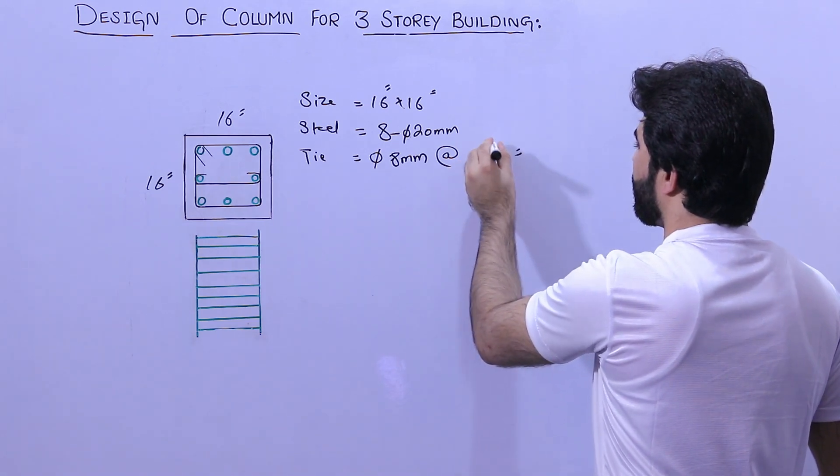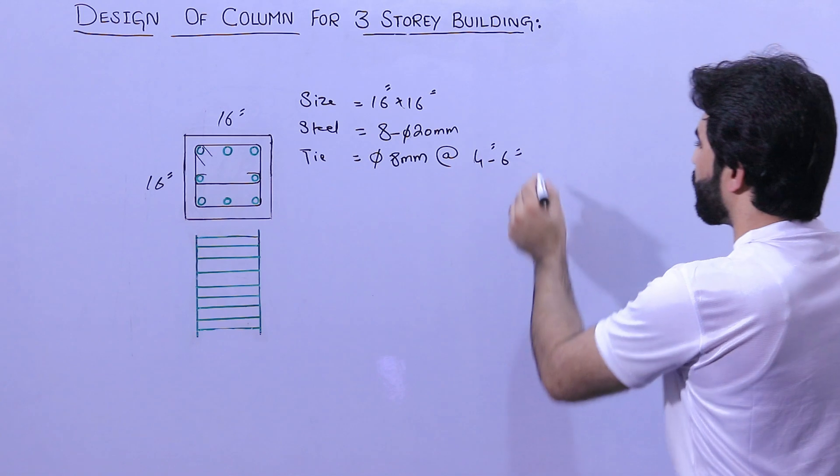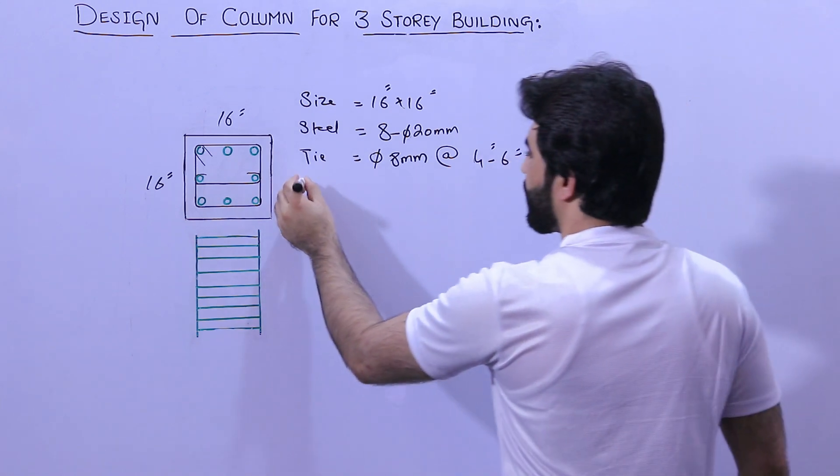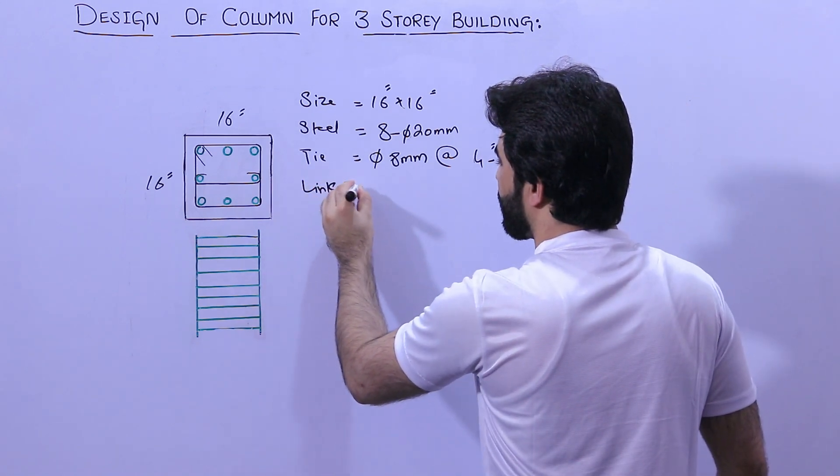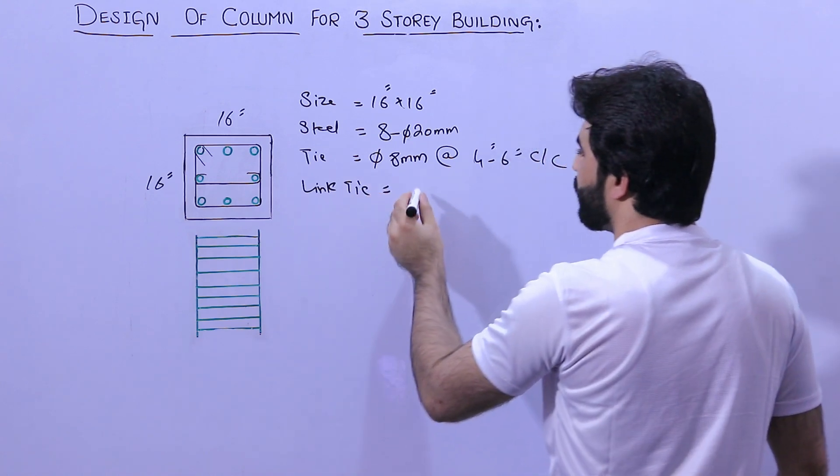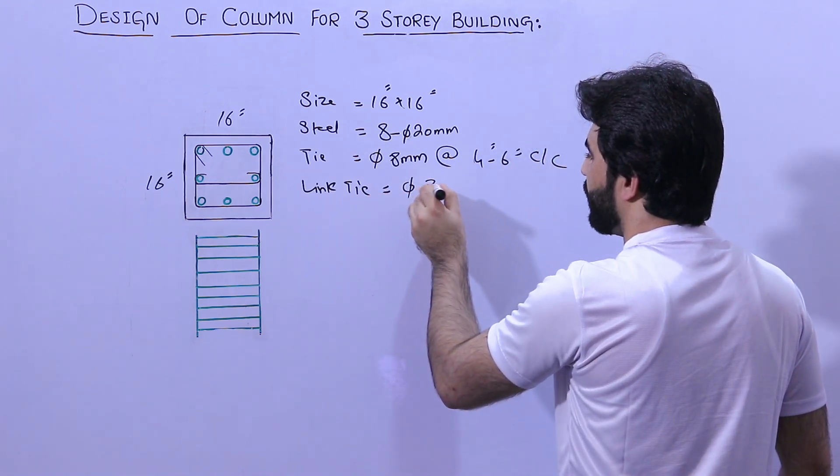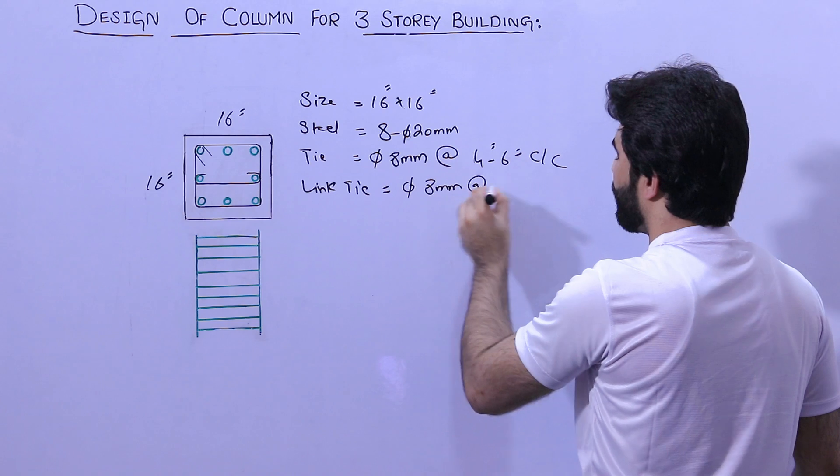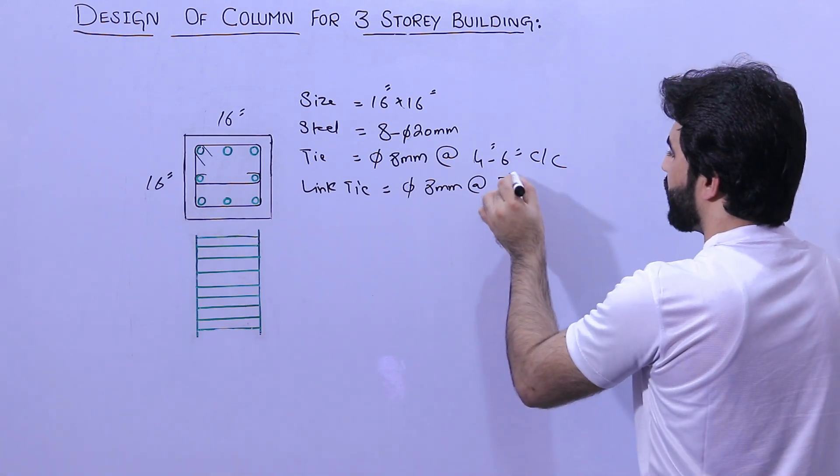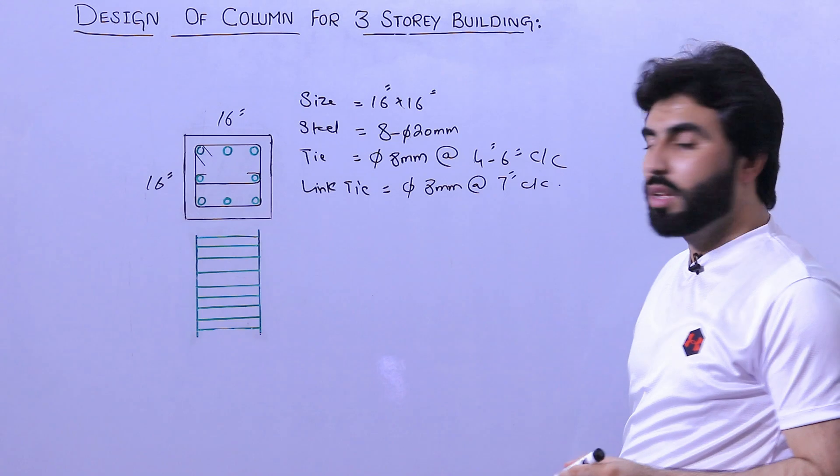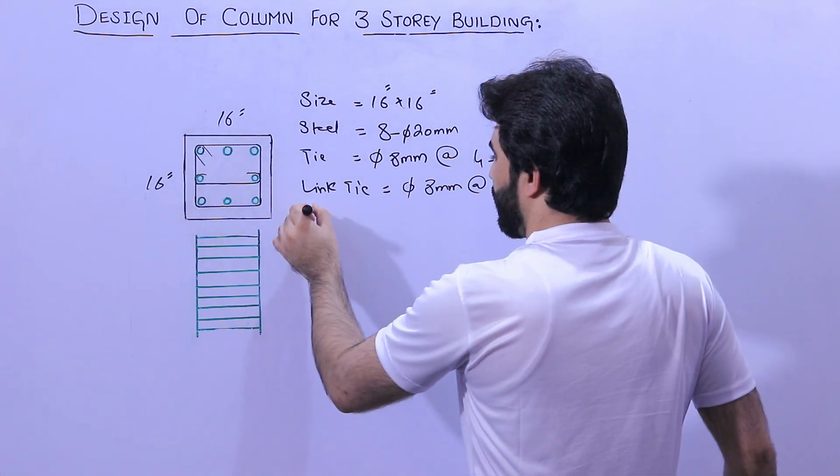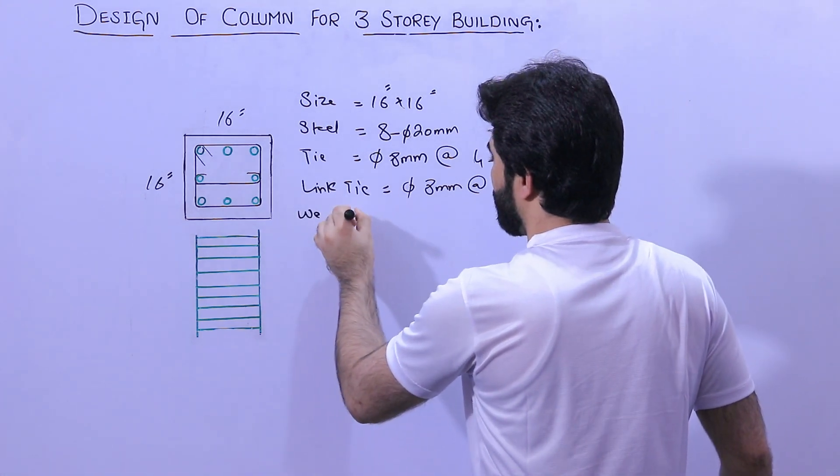Next length tie, you can see length tie. The diameter we used same 8 millimeter with the spacing of 7 inches center to center.